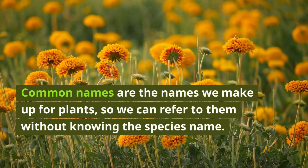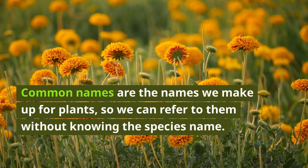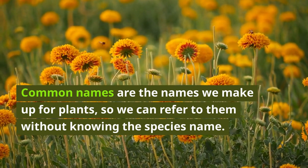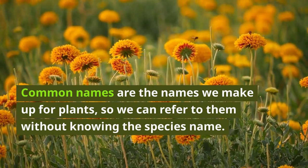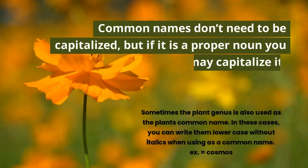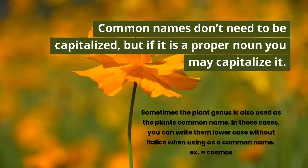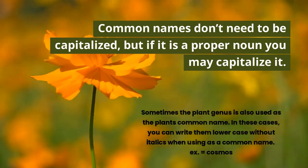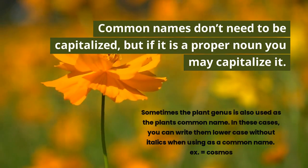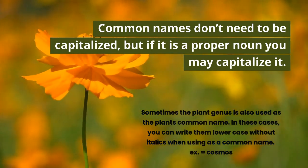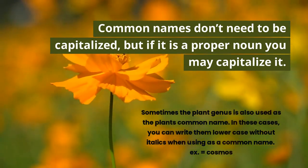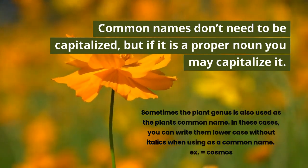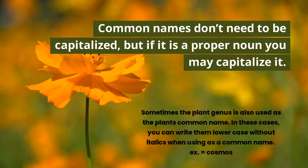Common names are both easier and trickier. Essentially, common names are the names we make up for plants colloquially so we can refer to them without knowing the species name — which means the same species could have many different common names depending on where you live. When writing plant common names, you don't need to get formal; they don't need to be capitalized, but if it is a proper noun in the common name, you may capitalize it. Sometimes the plant genus also serves as a plant's common name — in these cases, you can write the genus lowercase with no italics when using it as a common name. For example, cosmos: the genus is also Cosmos, and while you would capitalize and italicize it in the Latin binomial, when using it as a common name you simply write cosmos lowercase, no italics.